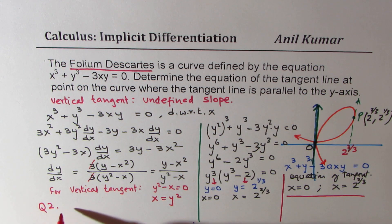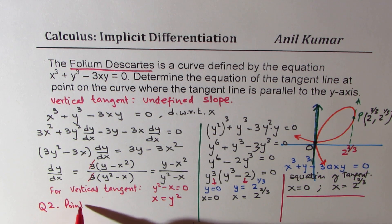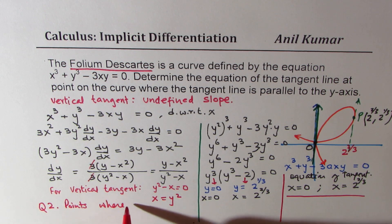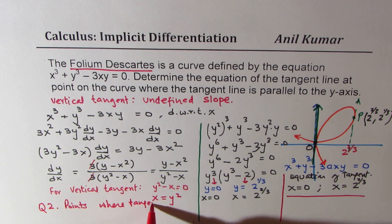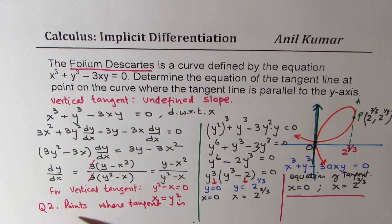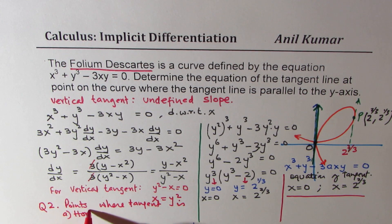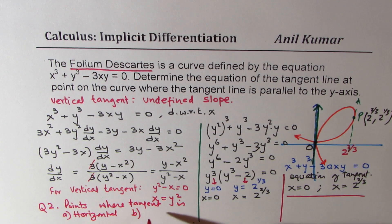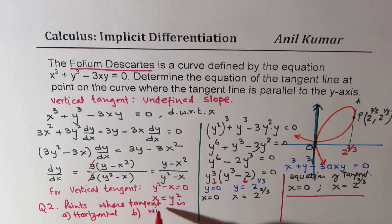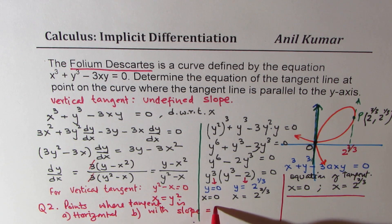We can say find points where tangent is a, horizontal, and b, where tangent is with slope equal to 1. So that is extended question for you.